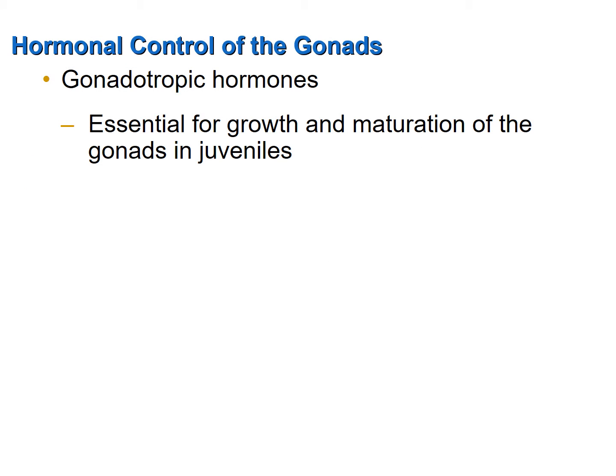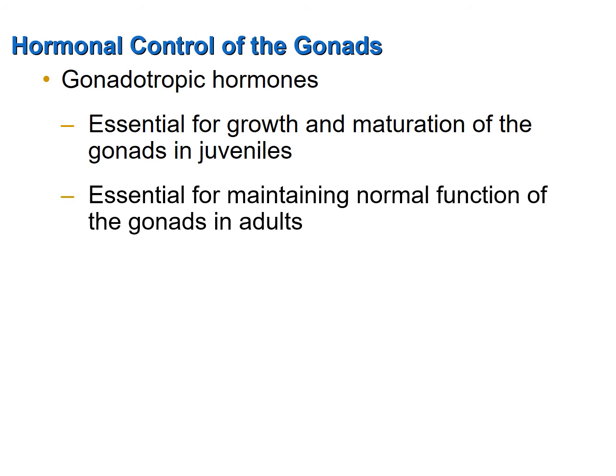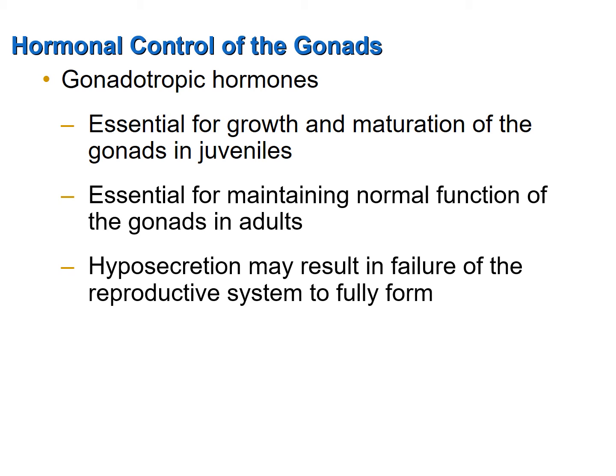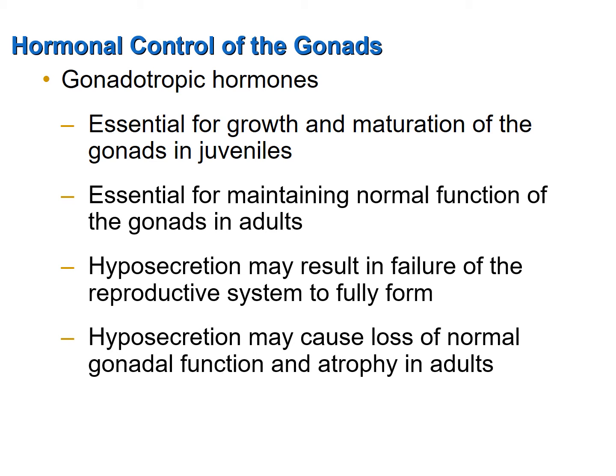Gonadotropic hormones are absolutely essential for the normal and proper growth and maturation of the gonads in juveniles. In adults who already have fully developed gonads, gonadotropic hormones are essential for maintaining normal functioning of those gonads. Hyposecretion of gonadotropic hormones in juveniles may result in the failure of the reproductive system to fully develop. In adults, hyposecretion can cause a loss of normal function of the gonads and possibly atrophy.